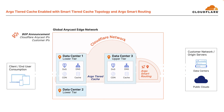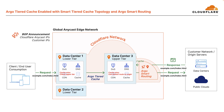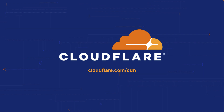In this case, in addition to Argo Tiered Cache with Smart Tier Cache topology, Argo Smart Routing is also enabled. Again, when the client sends a request to the lower tier data center, if the content is not cached, the upper tier data center is checked. Same as prior, if the content is not cached at the upper tier, the upper tier requests the content from the origin. And in this case, since Argo Smart Routing is enabled, the fastest and most reliable route to the origin is used to request the content. Once the response is returned from the origin, the upper tier caches it and returns the response to the lower tier, which also caches it and responds to the client.